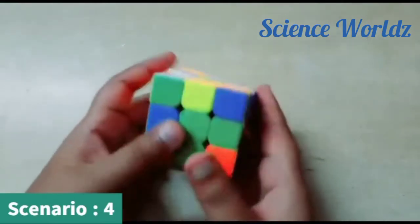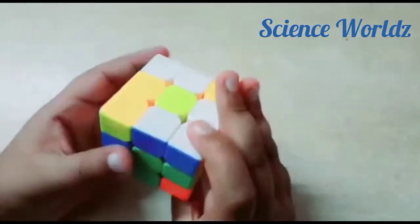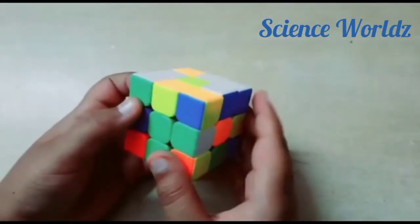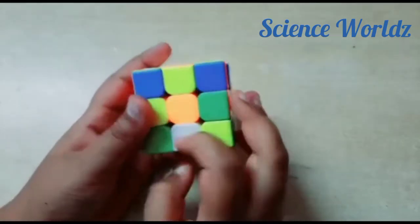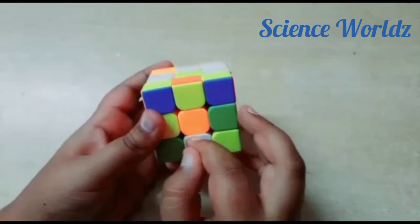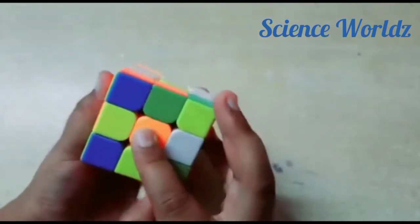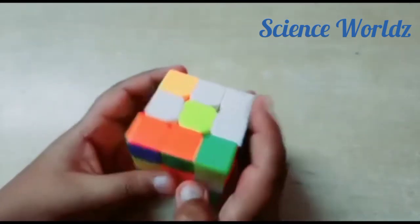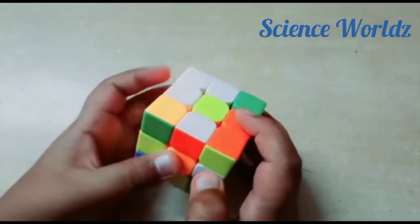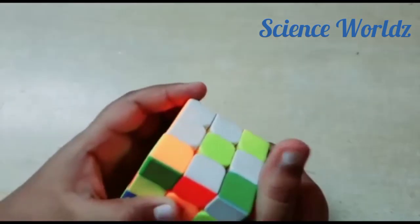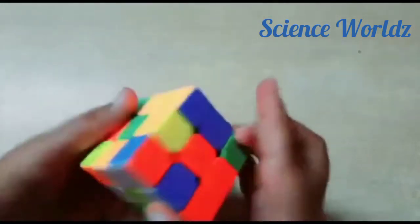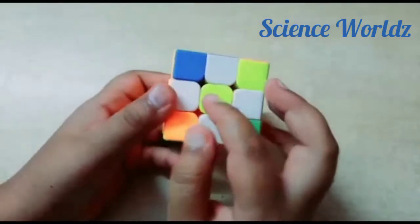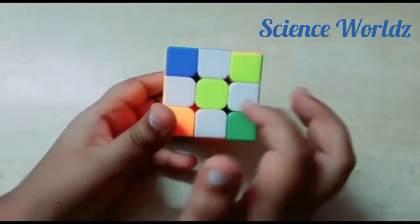We got a lovely floral design. And then, for our next scenario, white color is on the bottom layer again but it is facing front. For this, we need to turn this so that it goes to the second layer. Ensure that it is a non-white color and then do it. We got a lovely floral design with yellow on the center and white on the edges.